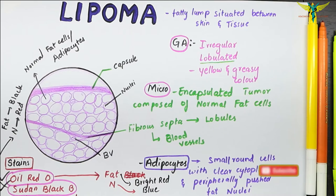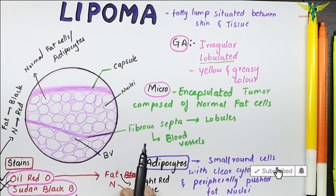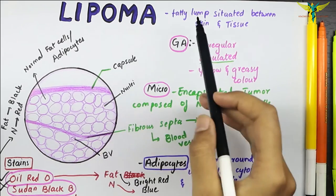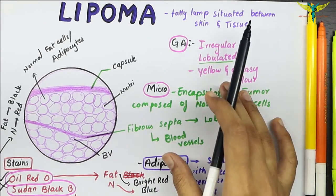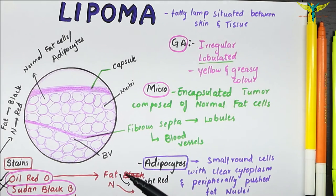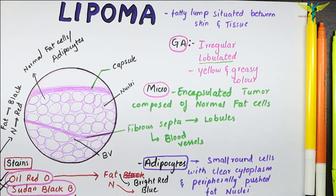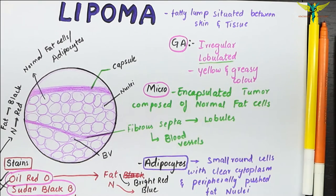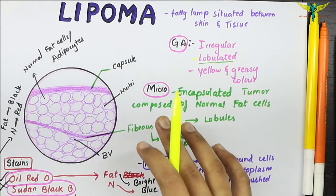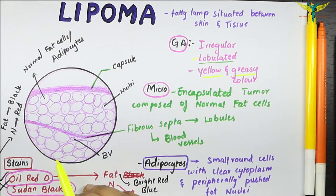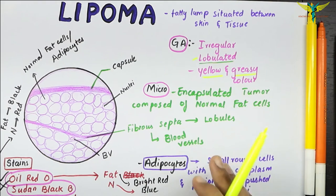To revise: a lipoma is a fatty lump situated between the skin and underlying tissue. Lipomas are generally harmless and slow-growing, though in rare cases they can be cancerous. In gross appearance, lipomas are irregularly shaped and lobulated, yellow and greasy in color due to their fat content.